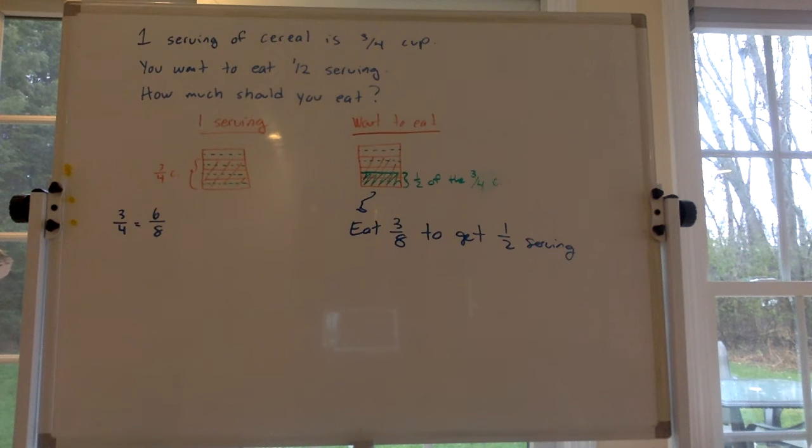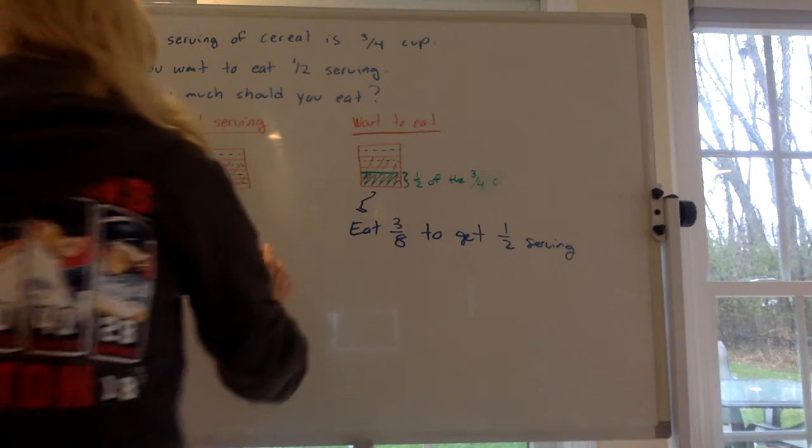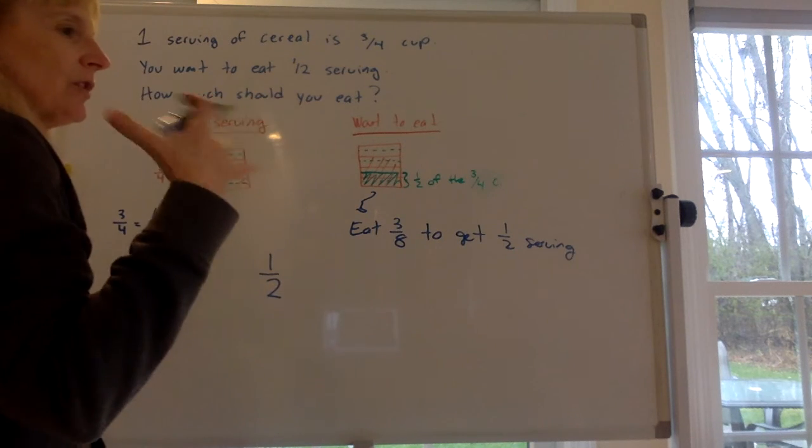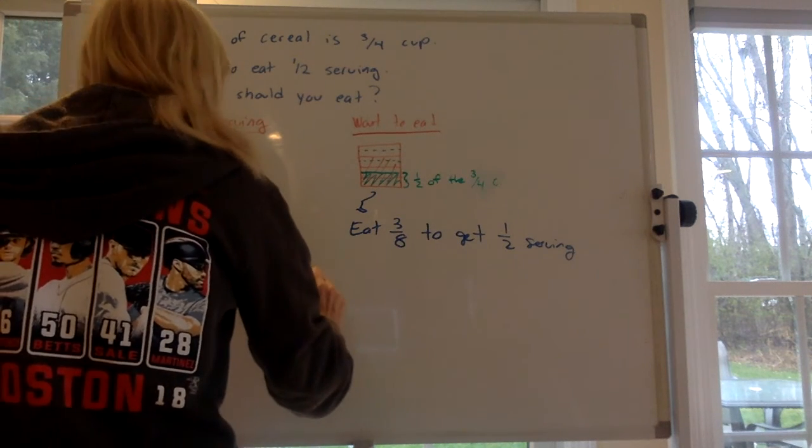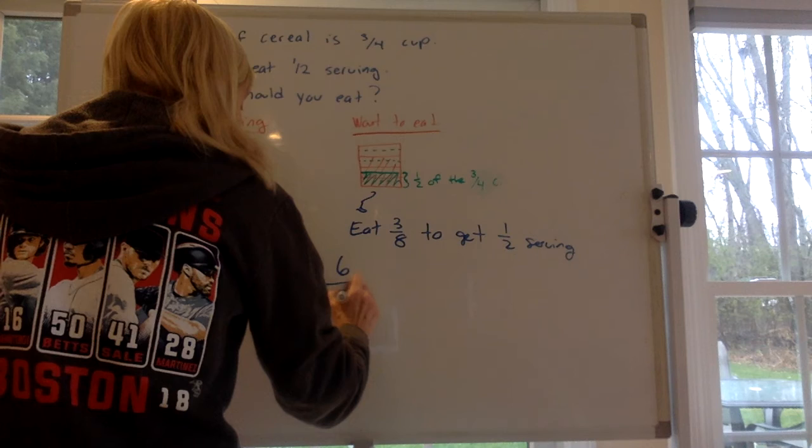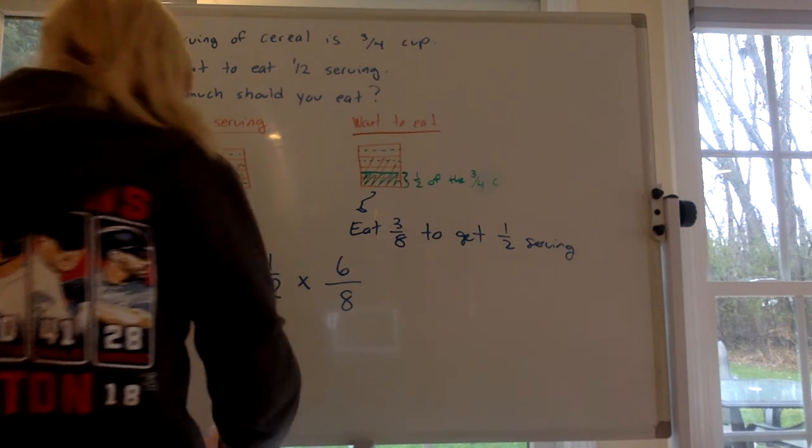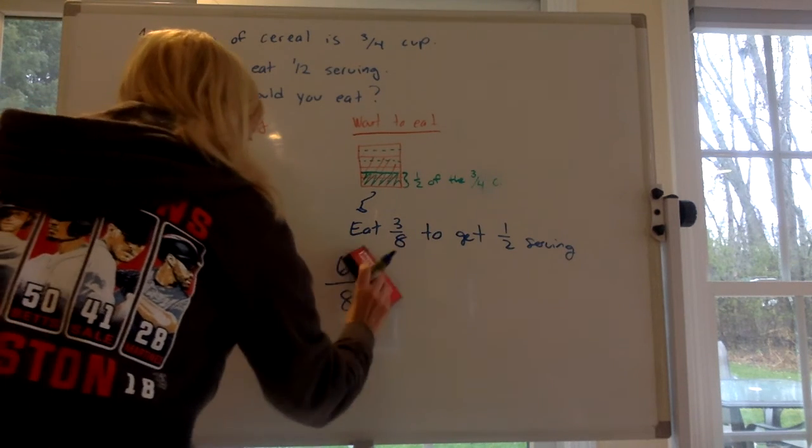Another way you can think of it is you want to eat one half of what? Remember when you hear the word of think times. One half of six-eighths. What's one half of six-eighths? Or you could even do one half of the three-fourths.